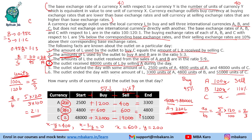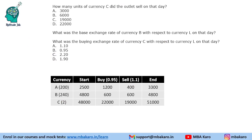Now the questions: How many units of A did the outlet buy? — 1200 units. How many units of C did the outlet sell? — 19,000 units. What was the base exchange rate of currency B with respect to L? — 240. What was the buying exchange rate for currency C? — The base rate of C is 2, and buying rate is 0.95 × 2 = 1.9.